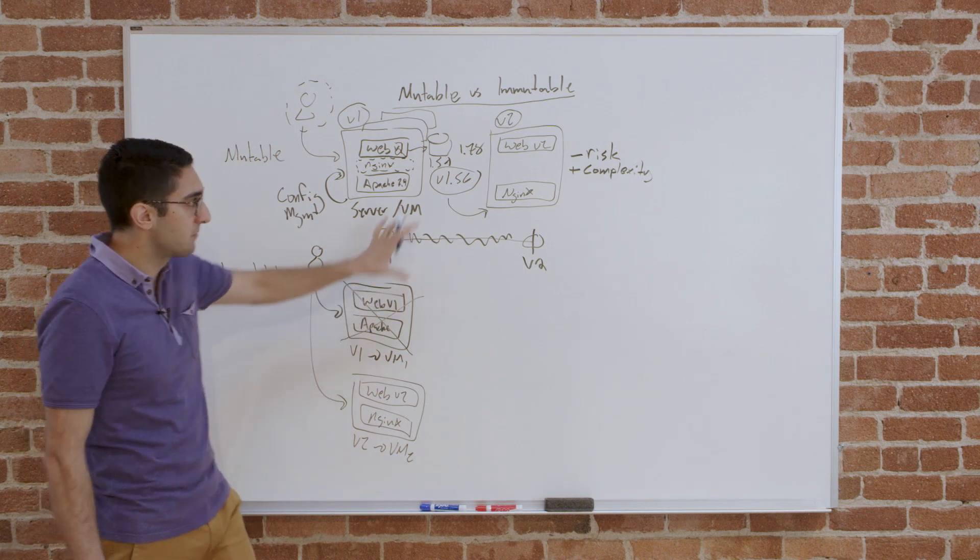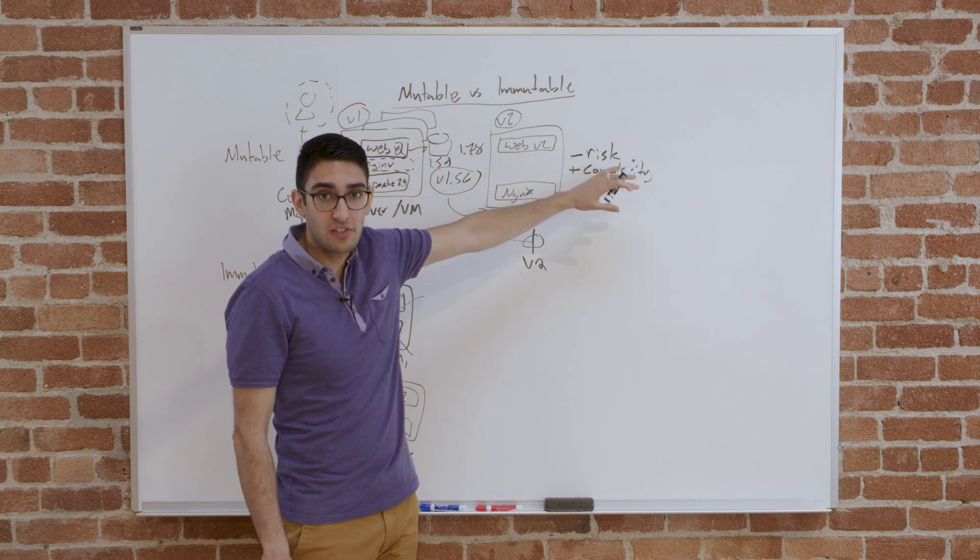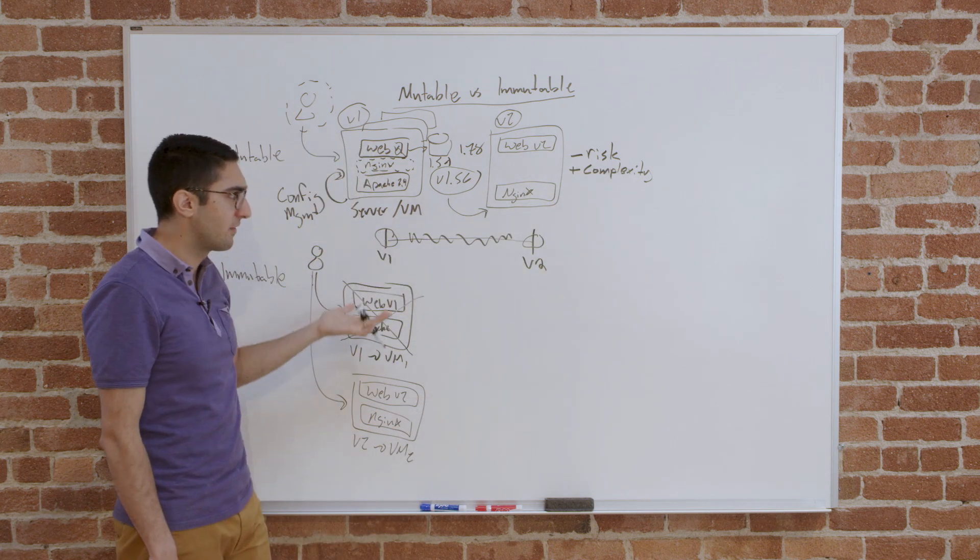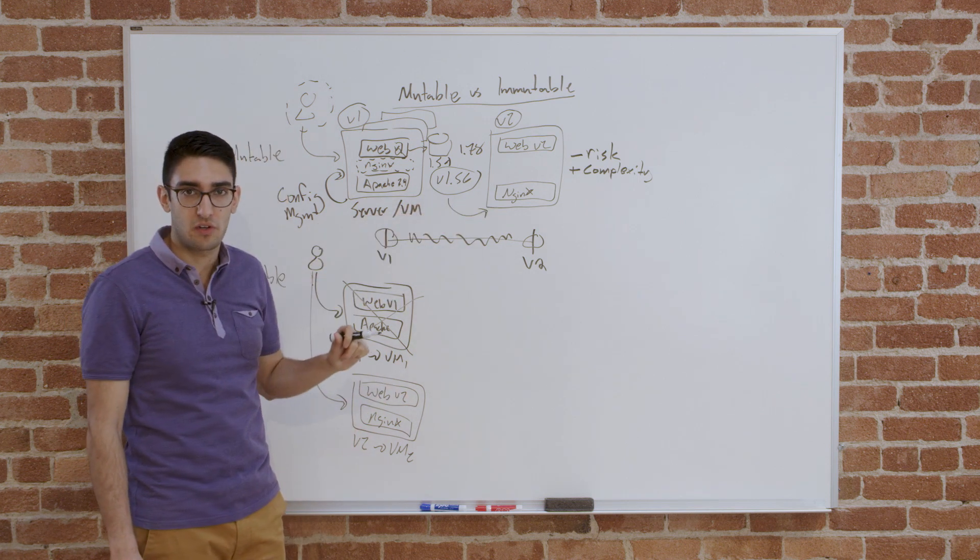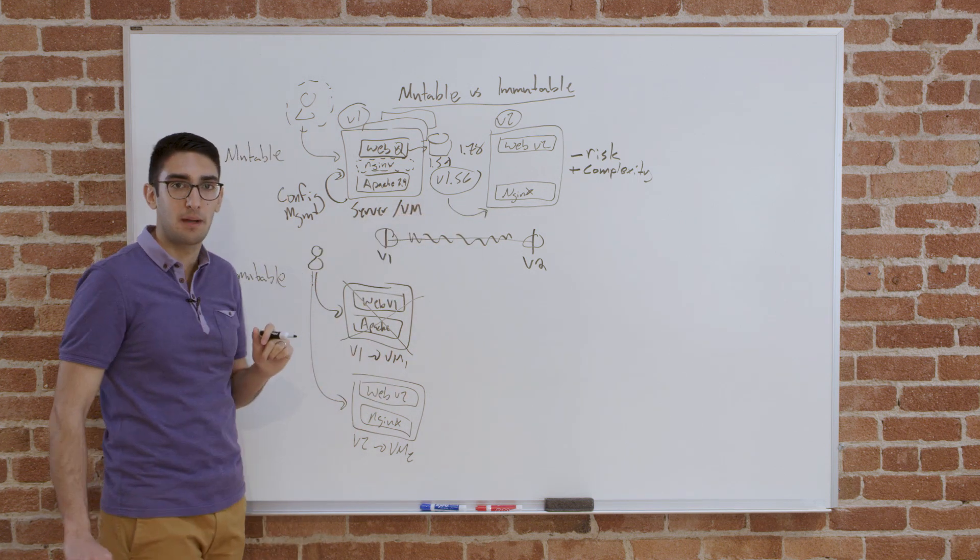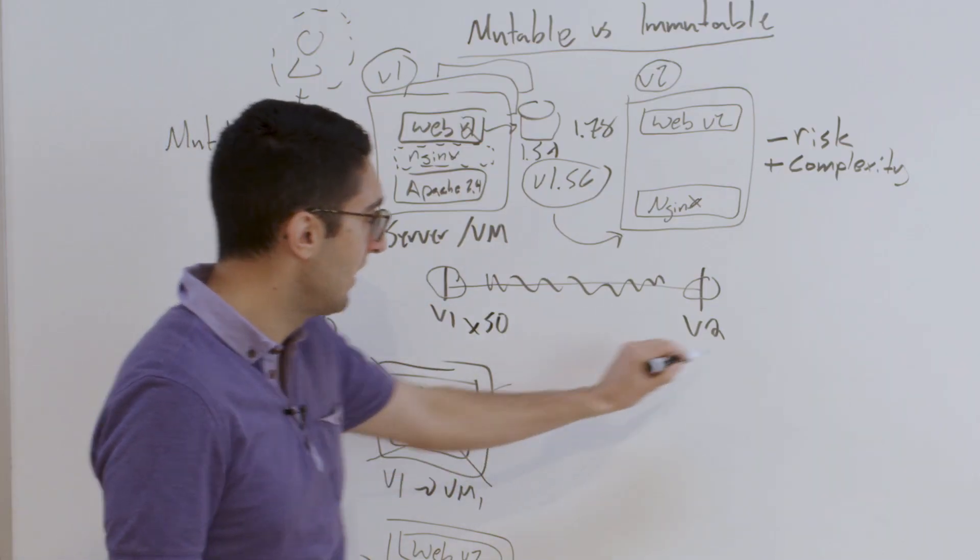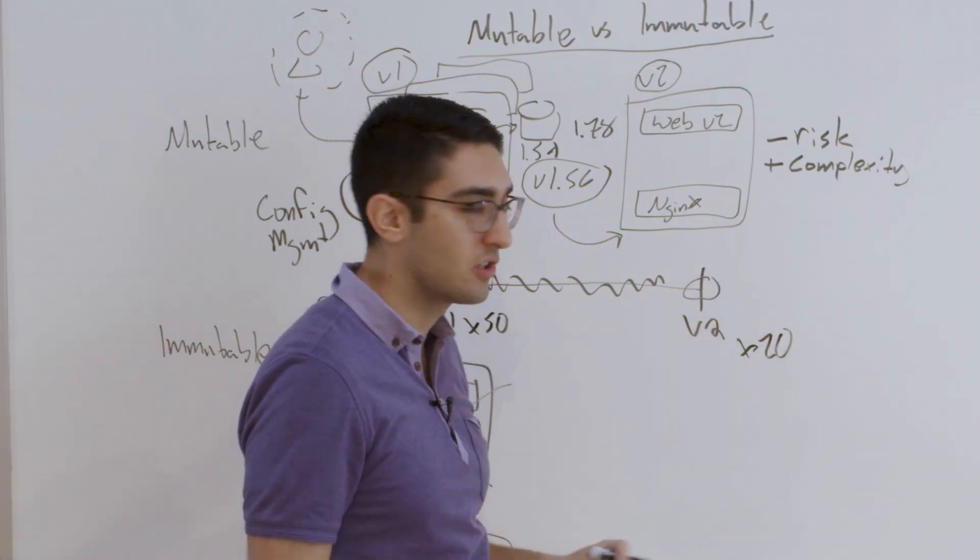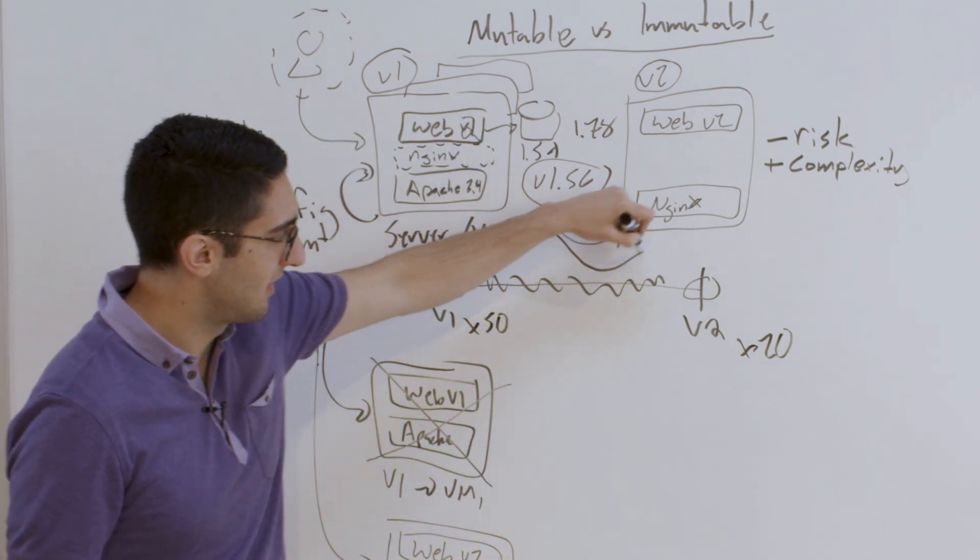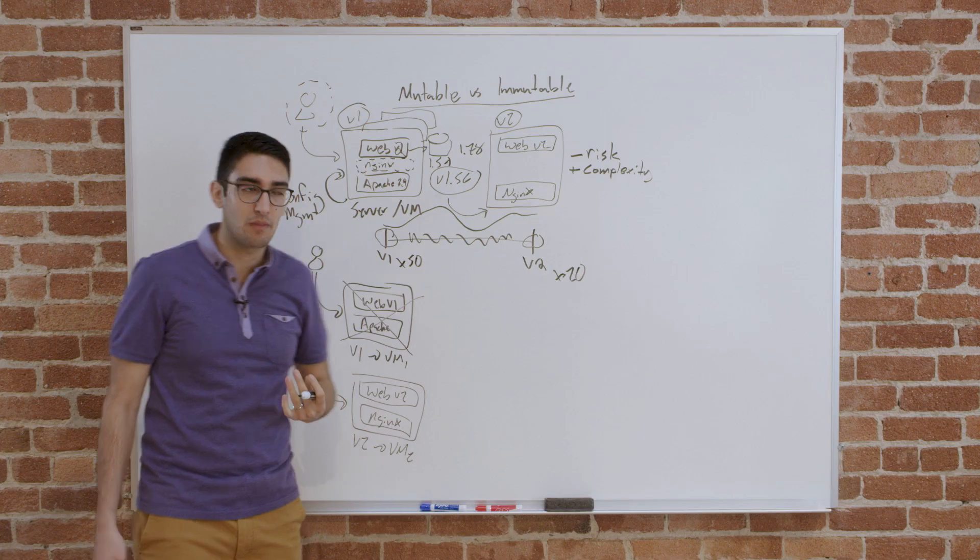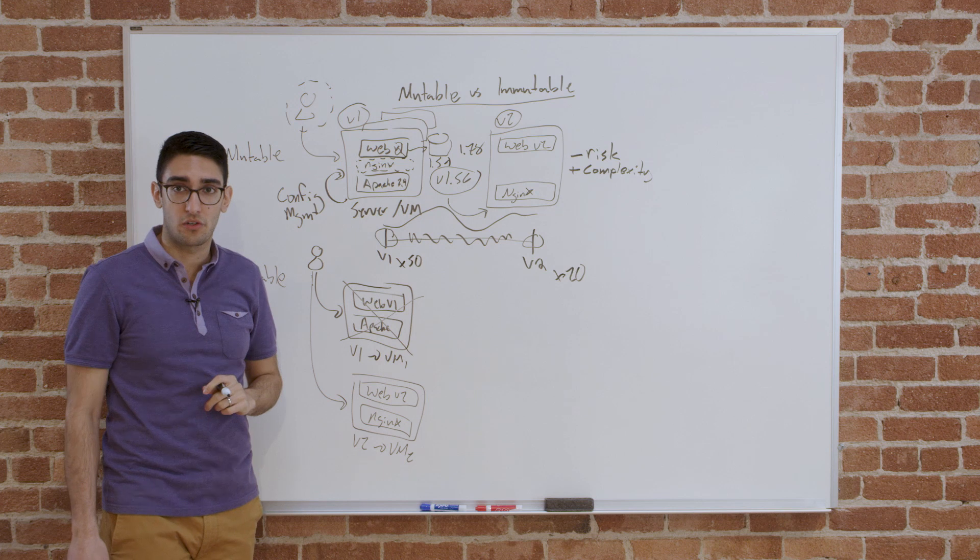And so the advantage of this becomes, as we think about risk and complexity, there's much lower risk. Because we don't have these undefined states that aren't validated, but we also reduce the complexity of our infrastructure. Because now I can talk in terms of histograms. I can say I have 50 machines in version 1 and 20 machines in version 2. As opposed to trying to talk about it as, I have some distribution of machines in different versions. So it's much lower complexity as I reason about what this infrastructure looks like. So it's not without trade-offs.